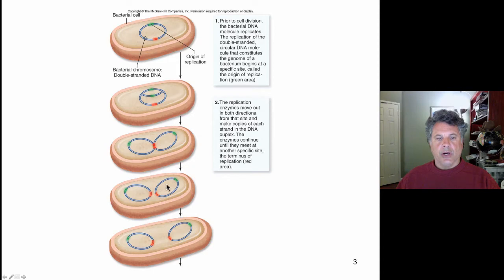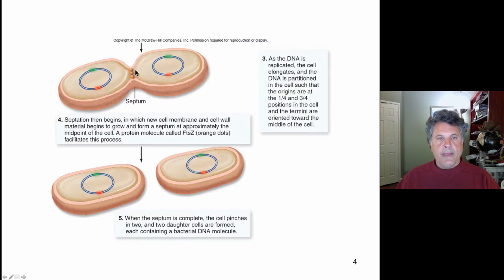We have two daughter circular chromosomes that move to opposite ends of the bacterial cell, and a septum is formed midway between the ends of the cell. That septum is assembled using a variety of proteins, one of which is called the FTSZ protein. As the septum forms and cell wall material and plasma membrane are assembled, we eventually bud off two daughter cells, each genetically identical to the parental cell.